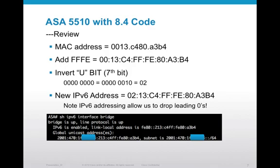I've got the show IPv6 interface command output here to verify my math and make sure I was right. Of course, since IPv6 addressing allows us to drop leading zeros — and leading zeros only — my output shows a little bit different than what we figured out, but it's basically the same thing.